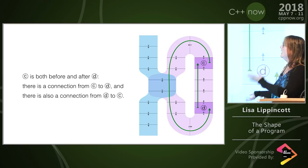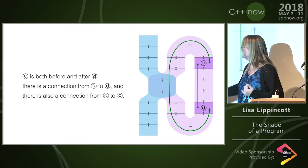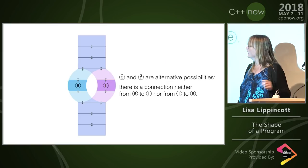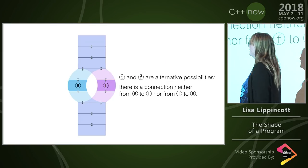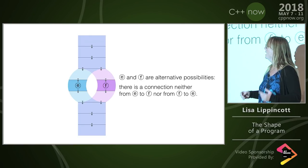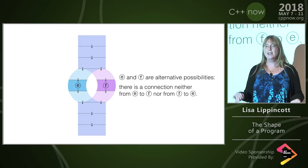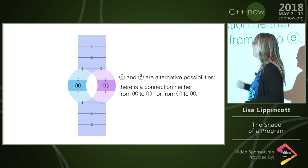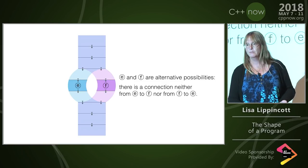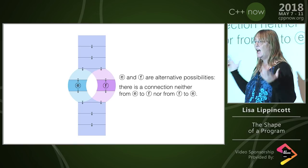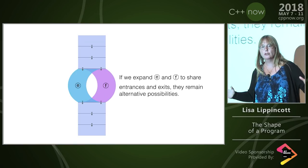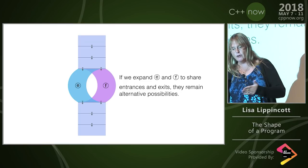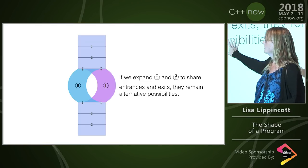If we go back to the wider neighborhood, C is after D and D is after C — connection both ways. If we have a branch, E and F are not connected to each other in either direction, even though they are part of the same neighborhood. There are alternative possibilities. Even if we push E and F out so they share entrances and exits, they're not adjacent exit-to-entrance. So these are still alternate possibilities.